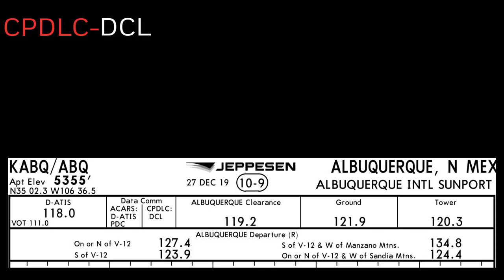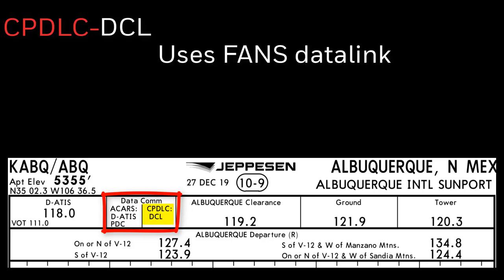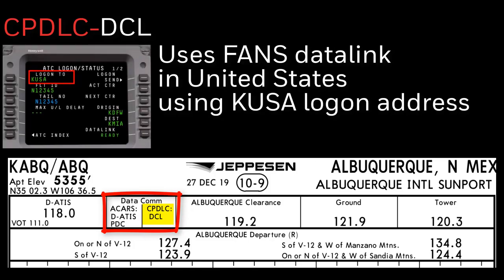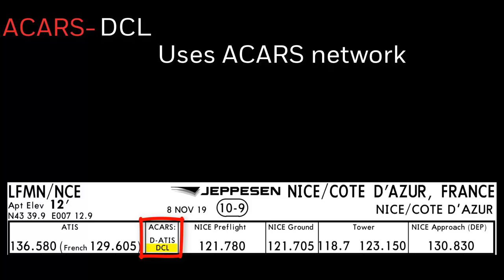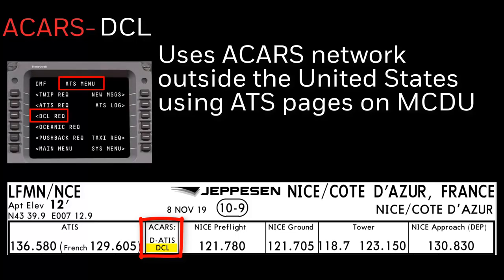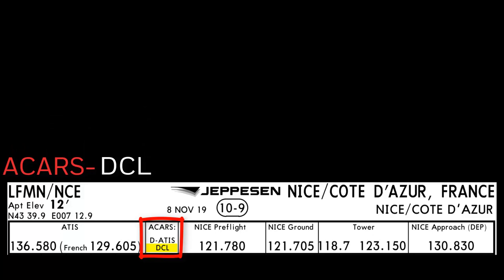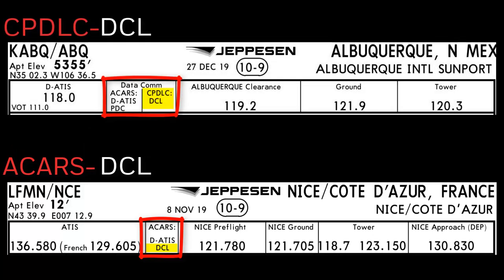There are two types of DCL in use today. The first is CPDLC-DCL, which is a method of obtaining your departure clearance directly from air traffic control. CPDLC-DCL availability is noted in the Datacom CPDLC box on the airport diagram. It uses the FANS Datalink network and is only available in the United States using the KUSA logon address. The second type of DCL is ACARS-DCL. This type of DCL availability is noted in the ACARS box on the airport diagram. It uses the ACARS network and is used outside the United States using the ATS pages on the MCDU. This type of DCL should not be confused with CPDLC-DCL. This quick topic video will only be discussing CPDLC-DCL and not ACARS-DCL.